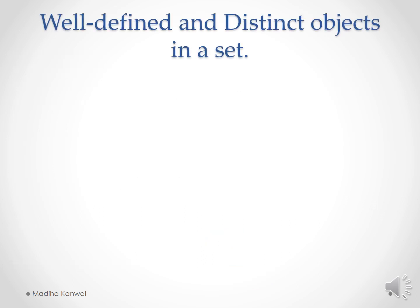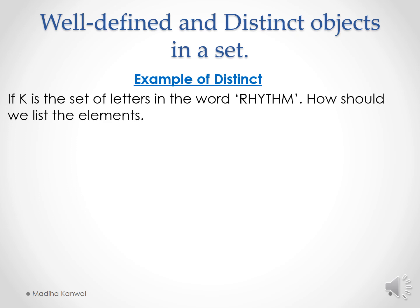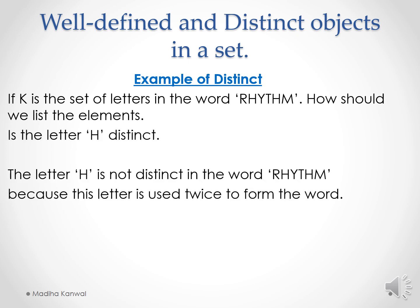There are two very important concepts to understand in the definition of a set. The first is distinct. If K is the set of letters in the word 'rhythm', the letter H is not distinct because it is used twice in the word. So while writing this set, we will not write H again, because each element of a set must be distinct.